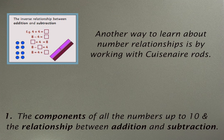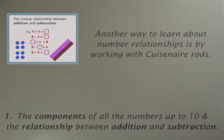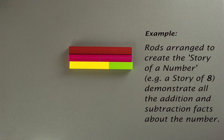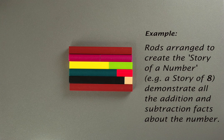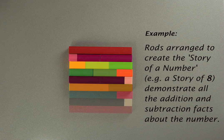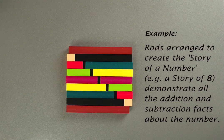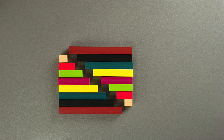Another way to learn about number relationships is by working with Cuisenaire Rods. In my example, Rods are arranged here to create the story of a number. Here it's the story of eight. The story of a number serves to demonstrate all the addition and subtraction facts about that number.